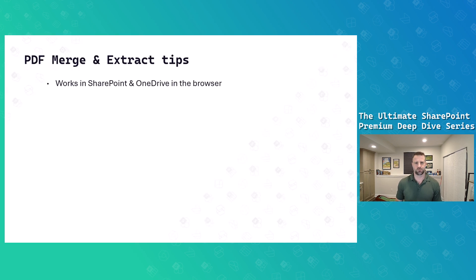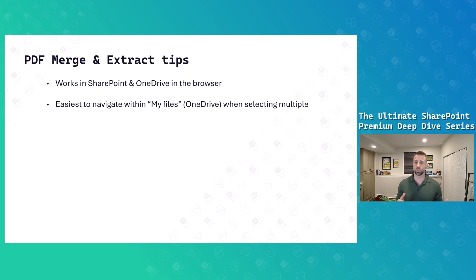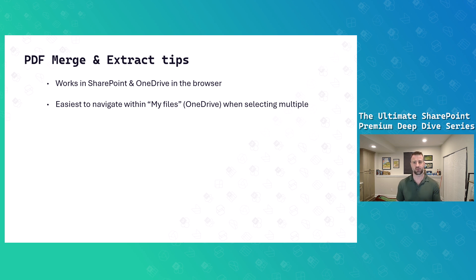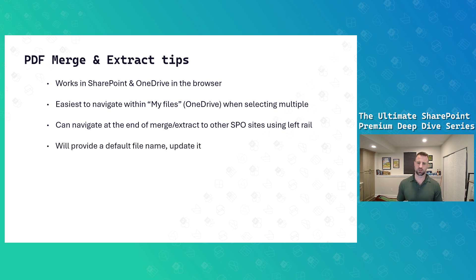Some helpful tips: PDF merge and extract works in both SharePoint and OneDrive — the experience is the same in both. When working with merge and extract, you can navigate within 'My Files' in OneDrive or use the left rail to access other SharePoint sites. You can merge files from multiple SharePoint sites or extract to other SharePoint sites using that left rail. Also, it will provide a default file name — I recommend updating it to avoid confusion.